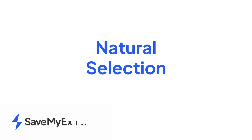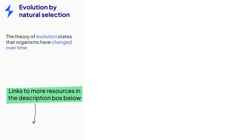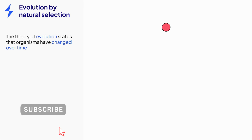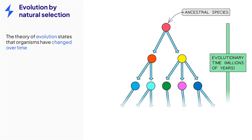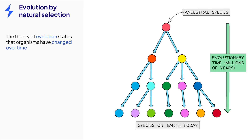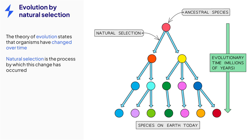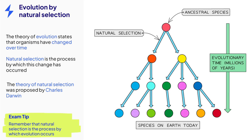This video is on the topic of natural selection. The species that live around us on Earth today have not always been the same. Evidence suggests that they all share a common ancestor, a single ancestral species from which all other species have evolved or changed over time. The process by which this evolutionary change has occurred is known as natural selection, a theory first proposed by the famous Charles Darwin. Remember that evolution refers to change and that natural selection is the process by which evolution occurs.